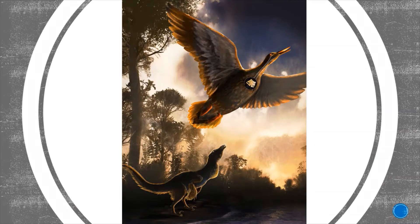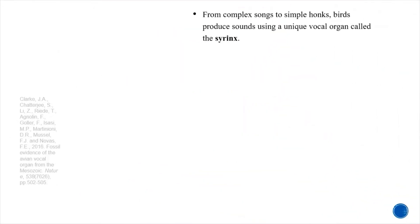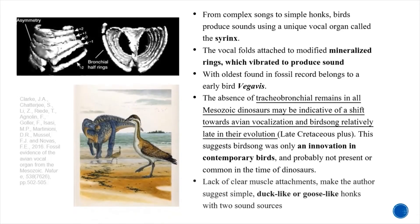Another study by Clarke in 2016 looks at evidence of the first fossilized vocal box of birds, found in an early goose from the Mesozoic — the first evidence of bird-like vocalization in the time of dinosaurs. The author writes: from complex songs to simple honks, birds produce sounds using a unique vocal organ called the syrinx; the vocal folds attached to modified mineralized rings which vibrate to produce sound — all this found in the fossil record in an early bird called Vegavis. The author states that the absence of syringeal remains in non-avian dinosaurs may be indicative of a shift towards avian vocalization in birdsong relatively late in evolution — Late Cretaceous onwards. This suggests birdsong was an early innovation in modern birds and probably was not present or common in the time of dinosaurs, meaning dinosaurs couldn't whistle and sing as birds do today.